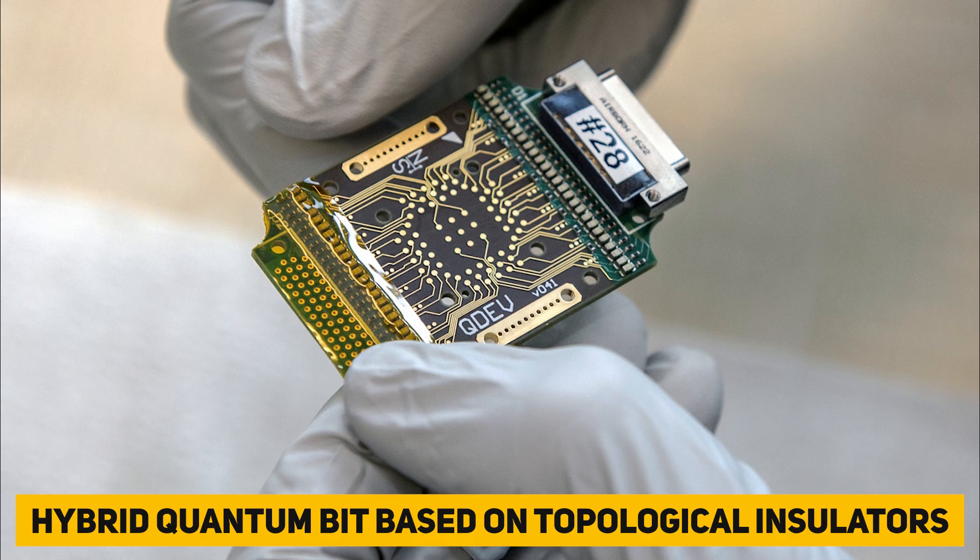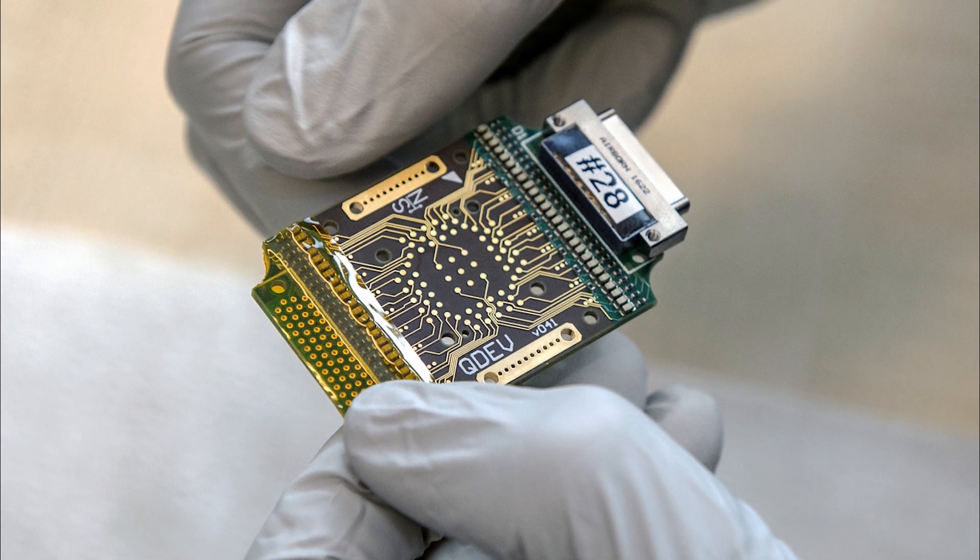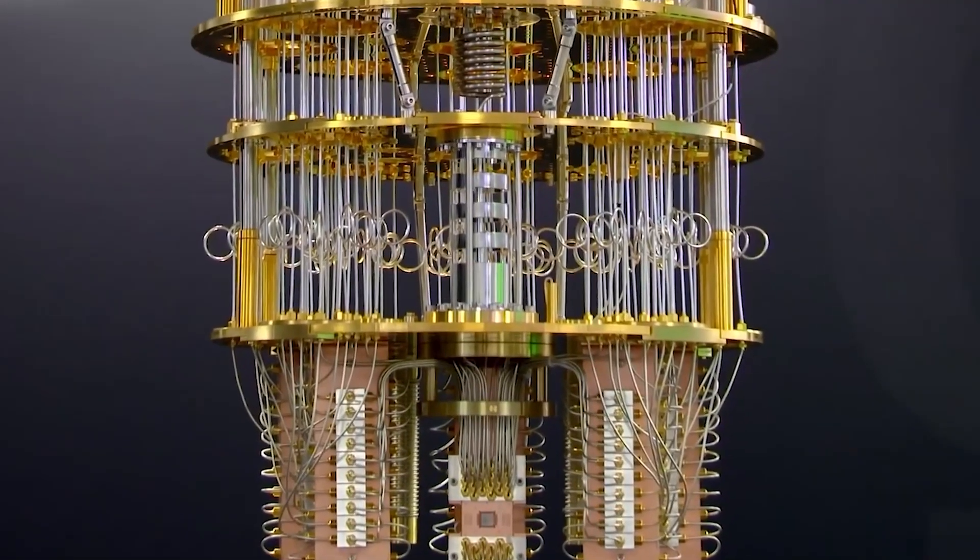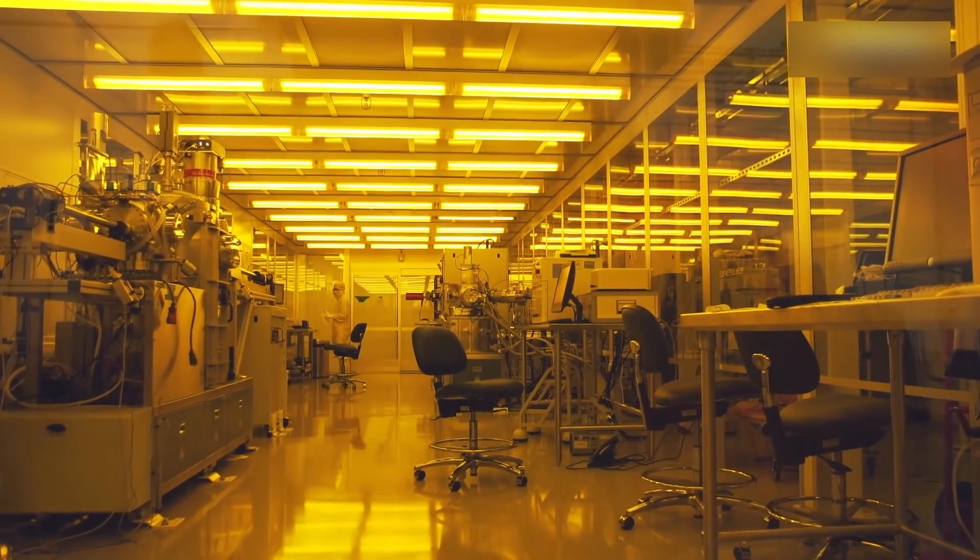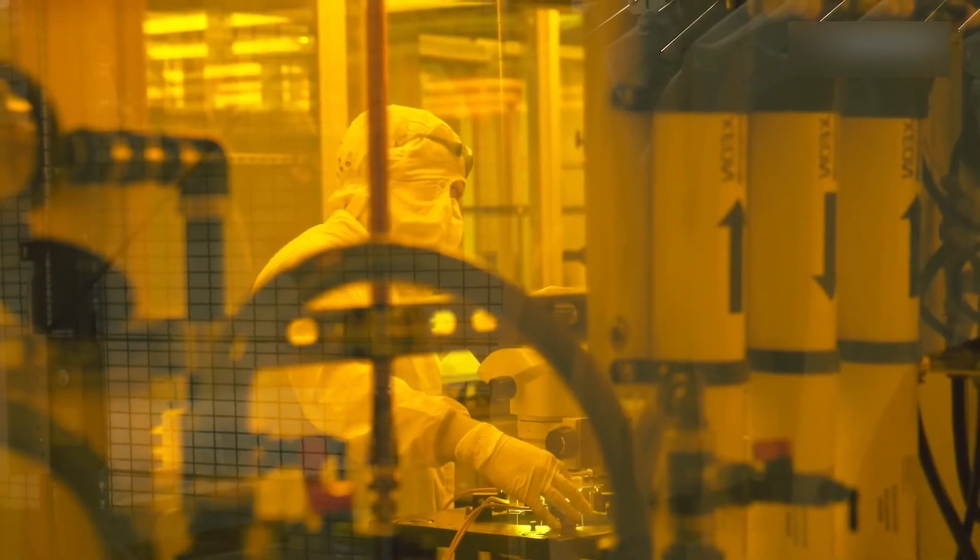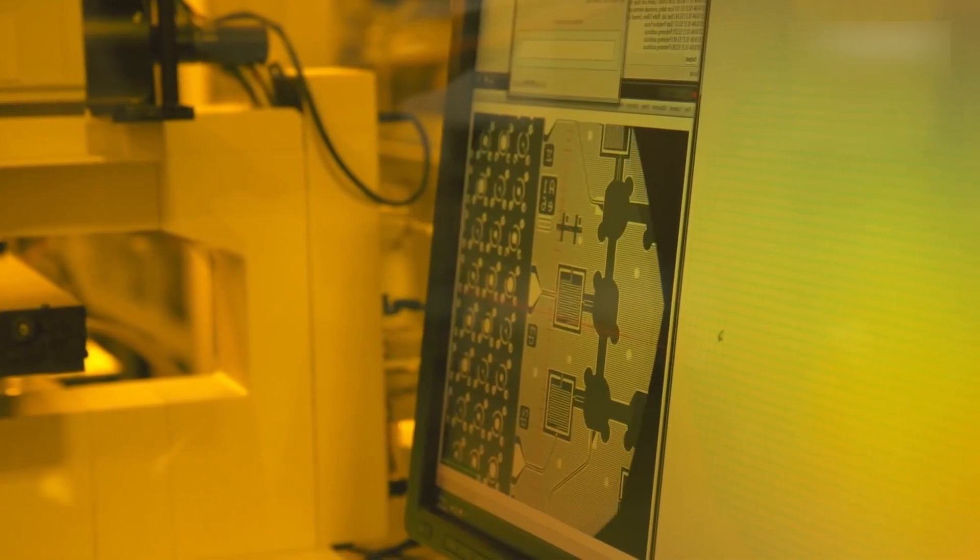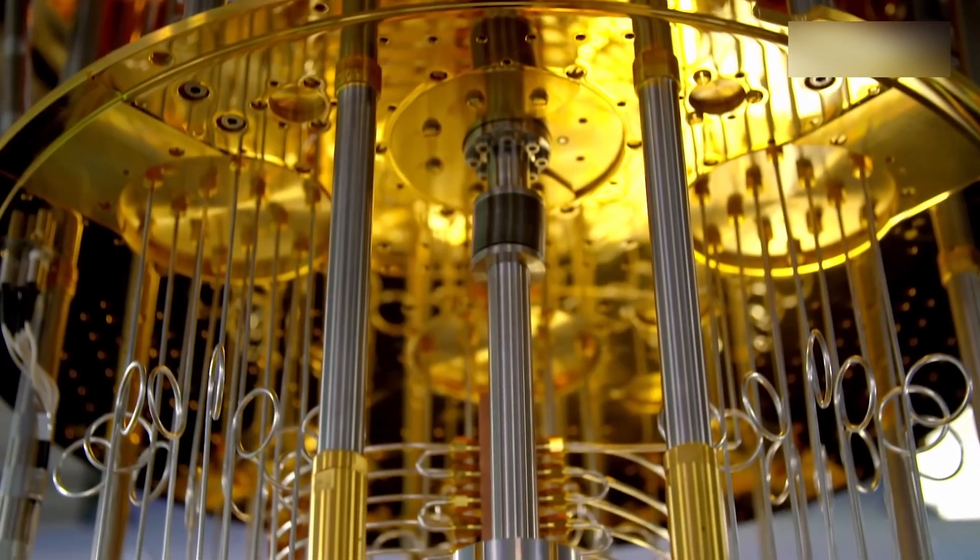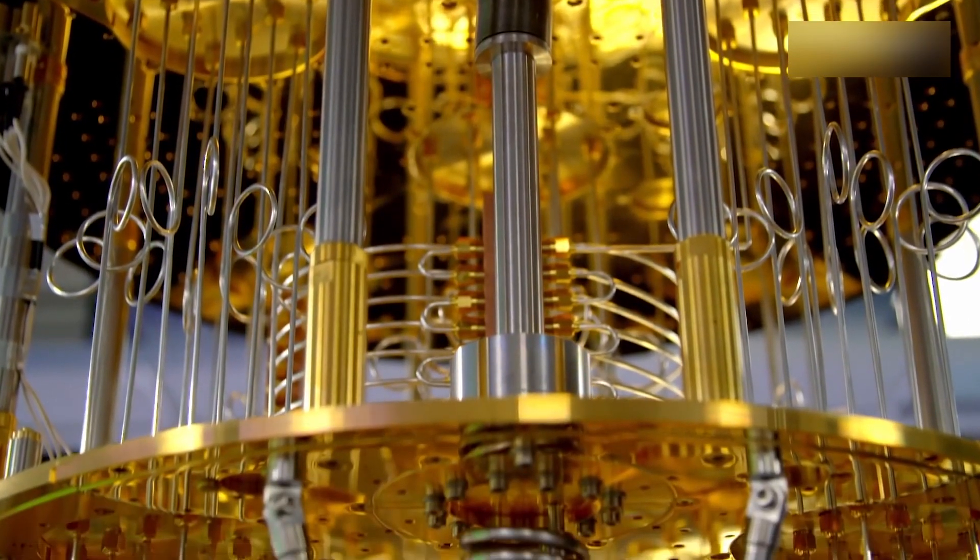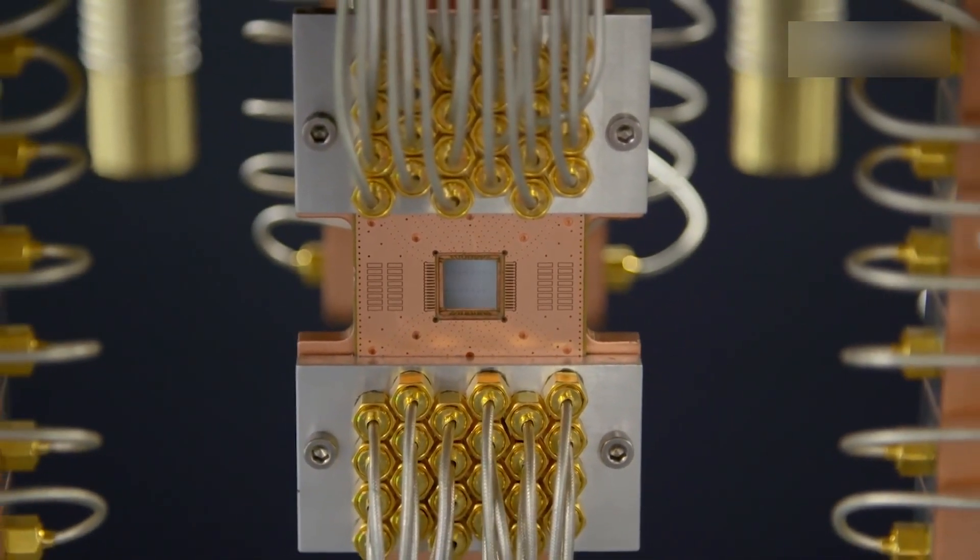Hybrid quantum bit based on topological insulators. Topological qubits, with their better qualities, could aid in the building of a universal quantum computer. So far, no one has been able to demonstrate an unambiguous quantum bit or qubit in a lab setting. However, researchers at Jülich's Forschung Zentrum have taken steps toward making this a reality. They integrated a topological insulator into a normal superconducting qubit for the first time. Quantum computers are widely considered to be the computers of the future.